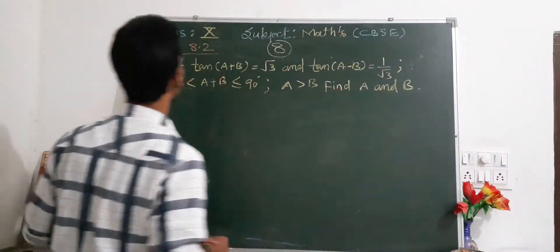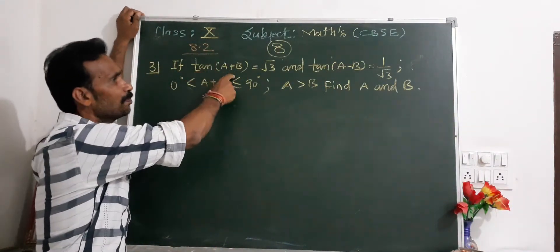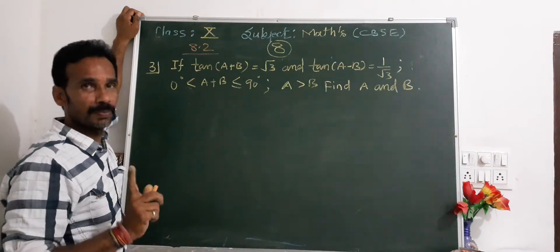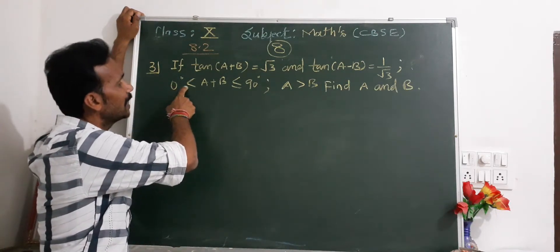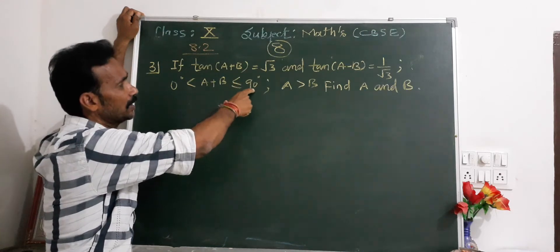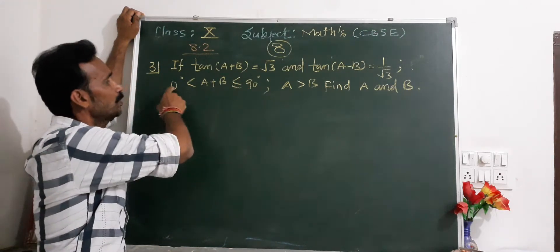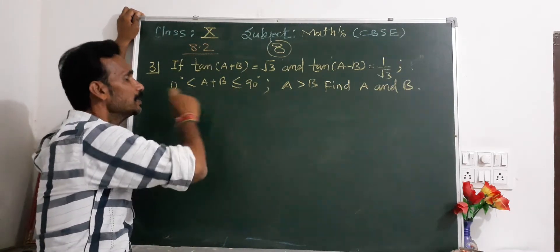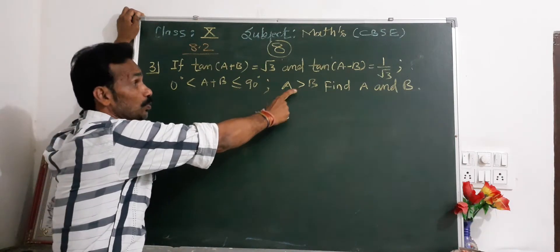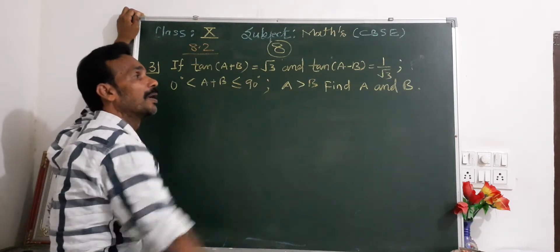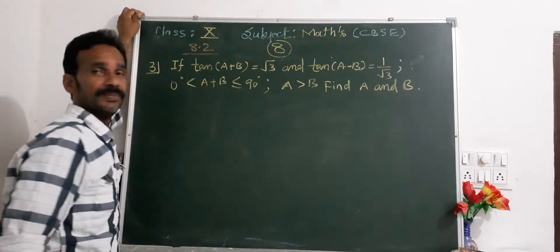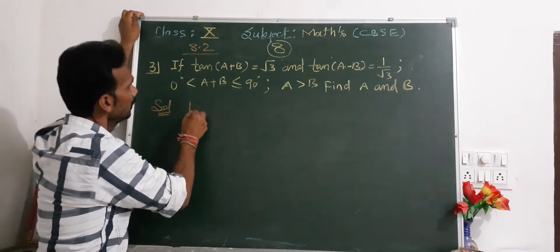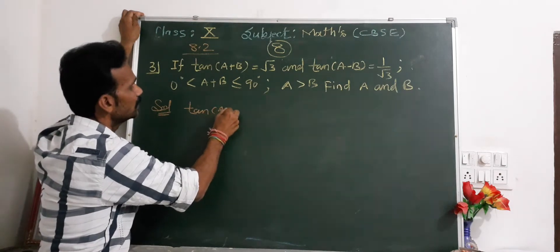Question number three, Exercise 8.0: if tan(a+b) equals root 3, and tan(a-b) equals 1 upon root 3, with the condition 0 degrees less than a+b less than or equal to 90 degrees, and a greater than b, then find the value of a and b.